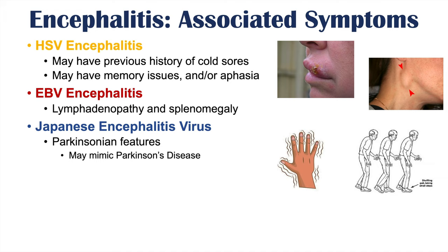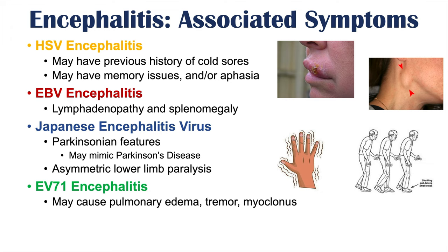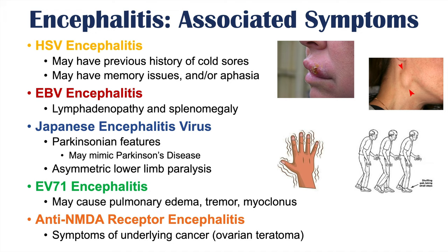In Japanese encephalitis, patients can also have asymmetric lower limb paralysis. In EV71 encephalitis, patients can have pulmonary edema, tremor, and myoclonus. In anti-NMDA receptor encephalitis, patients can have symptoms of an underlying cancer — oftentimes an ovarian teratoma — so this type of encephalitis typically affects young female patients.